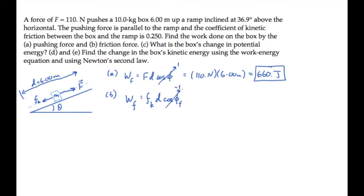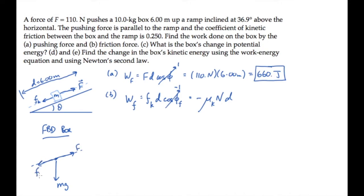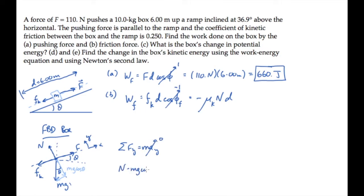We substitute the friction force equals mu sub k times n. To find the normal force, we use the free body diagram. There are four forces acting on the block: weight is straight down, the pushing force is up the ramp, friction is down the ramp, and the normal force is perpendicular to it. With a rotated coordinate system — x up the ramp and y perpendicular to it — we draw the y and x components of the weight. Summing forces in the y direction with no acceleration, we find that the normal force equals mg cosine of theta.